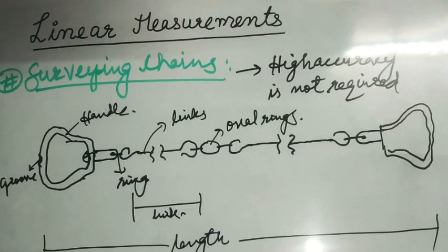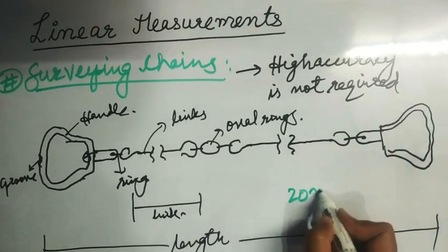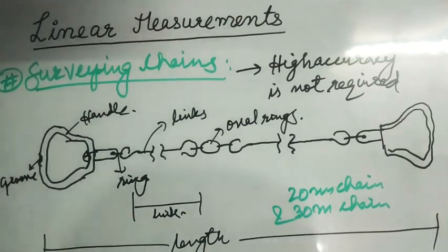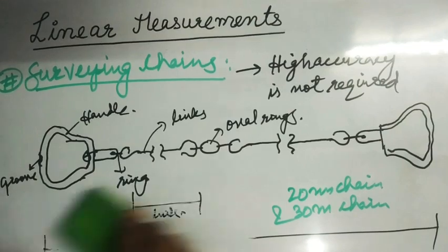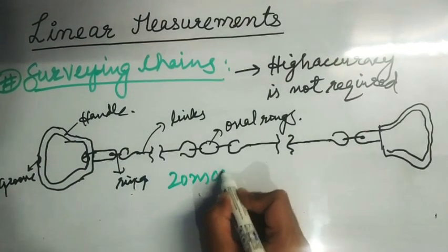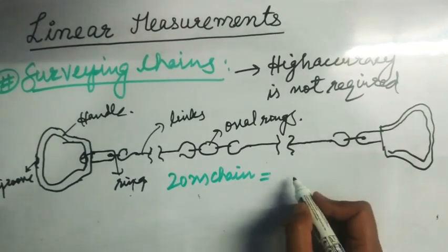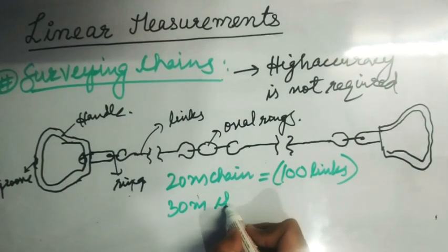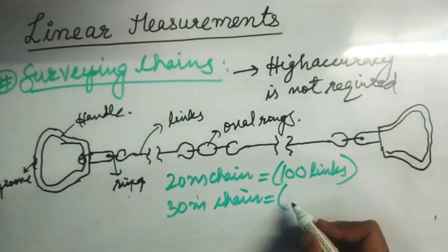Chains may be of various types, like 20 m and 30 m long. We are generally concerned with the 20 m chain and the 30 m chain for measuring linear distances. A 20 m chain has 100 links, and a 30 m chain has 150 links.